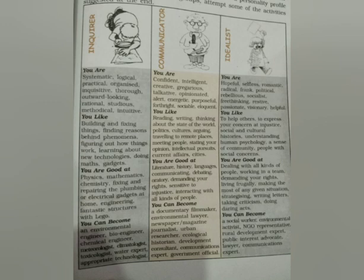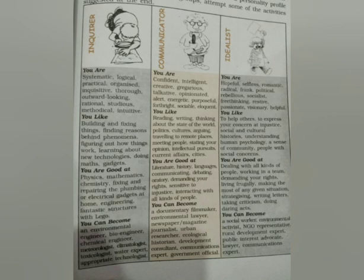If you are an idealist, you can become a social worker, environmental activist, NGO representative, rural development expert, public interest advocate, lawyer, or communications expert. Please read through all five natures again and choose one — or two — that you feel best describes you. Send me a message on WhatsApp saying, for example, 'Ma'am, I am an idealist' or 'Ma'am, I am a communicator,' and give a reason — just two or three sentences explaining why you have chosen that nature.